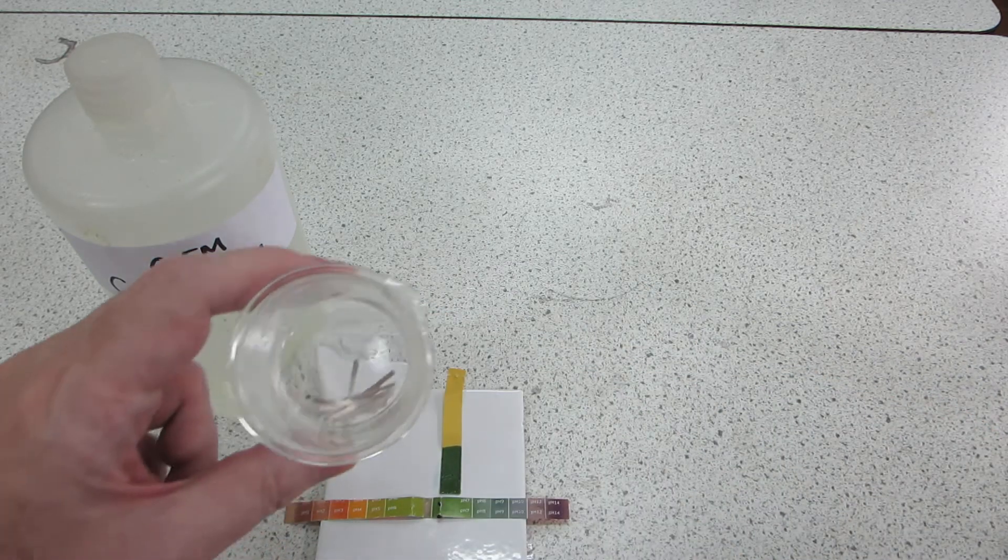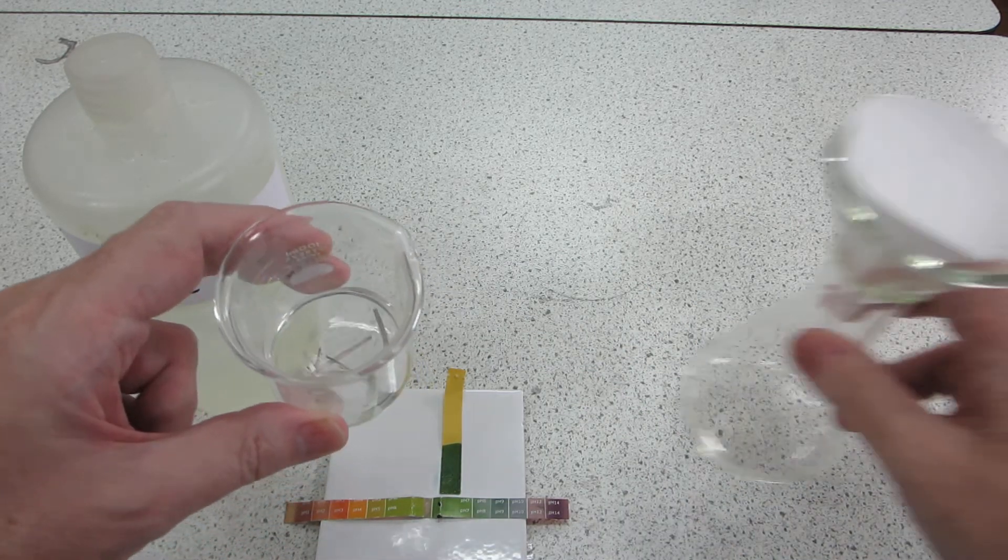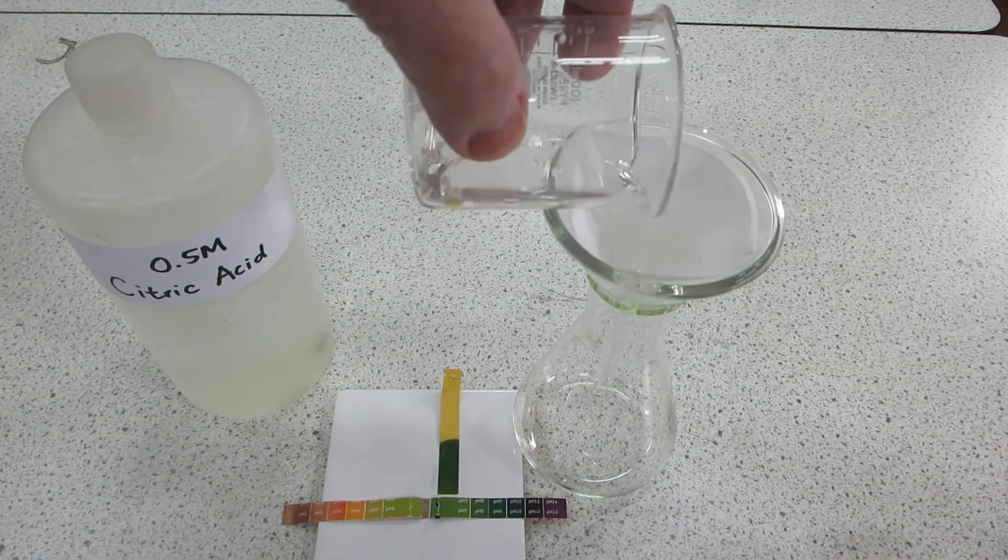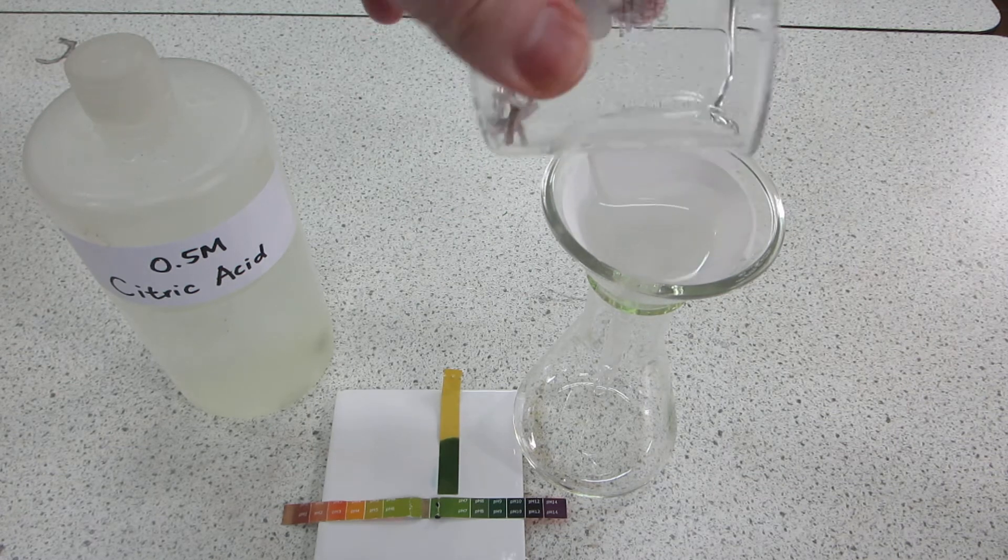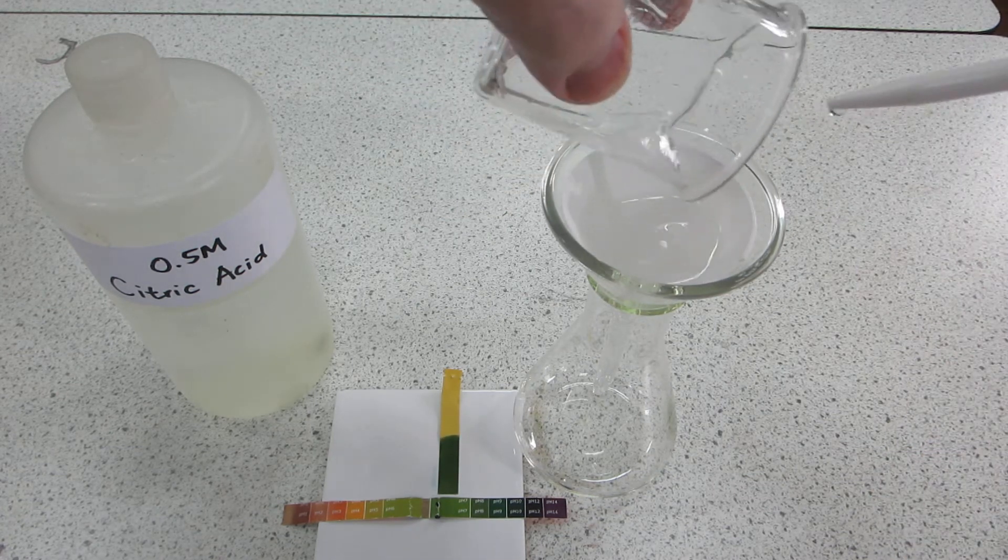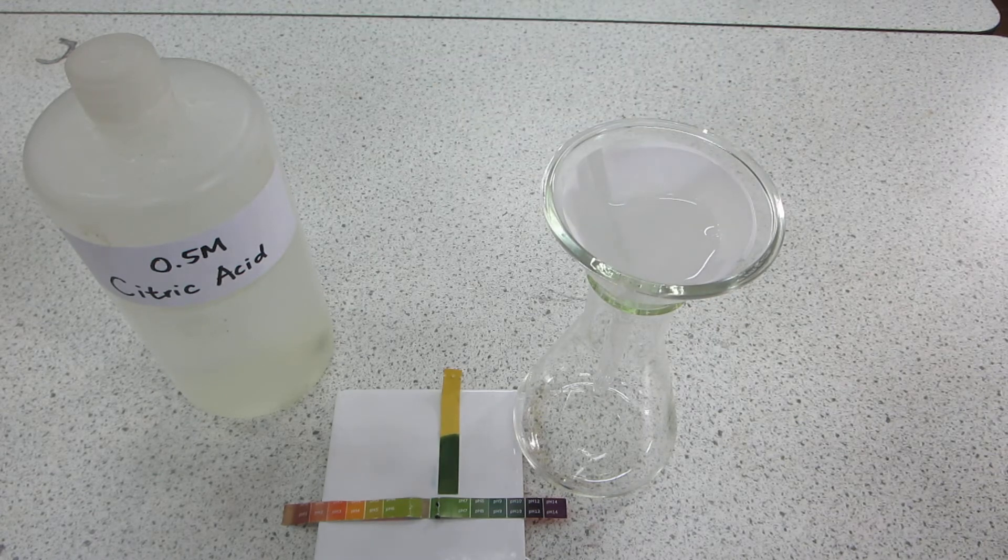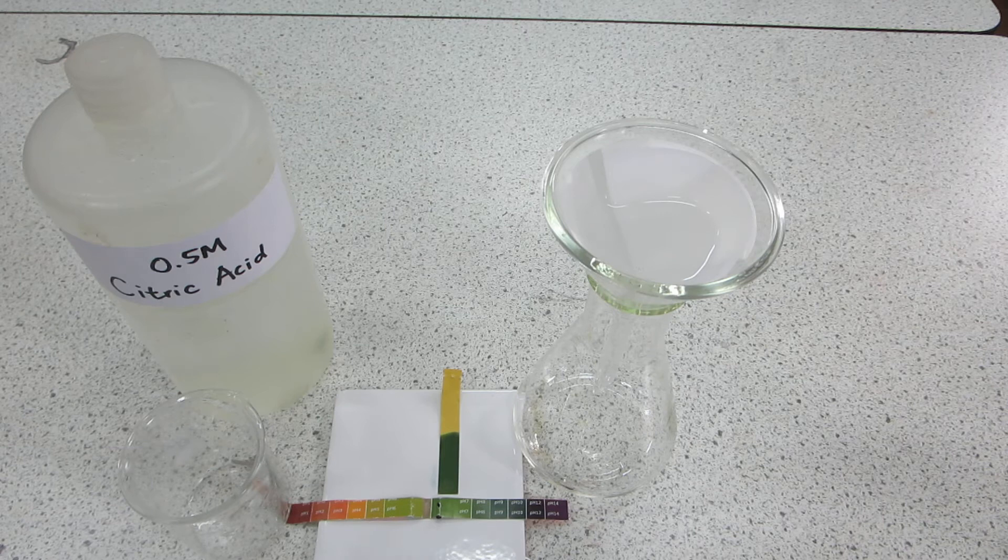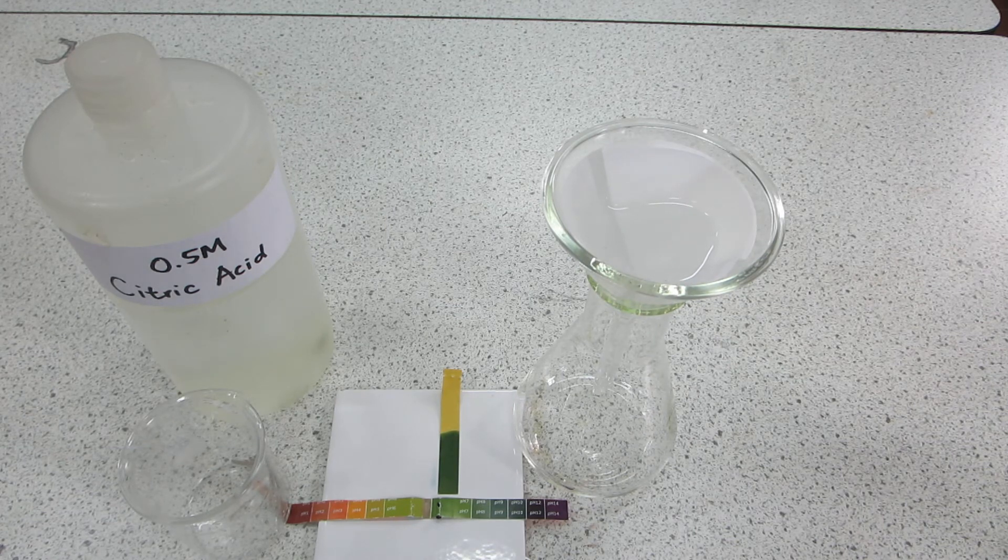Next thing to do is to filter off the magnesium to obtain the product in solution. Just rinse the magnesium lightly there. The filtration should be quite quick but we'll turn off the movie and come back in a few moments.